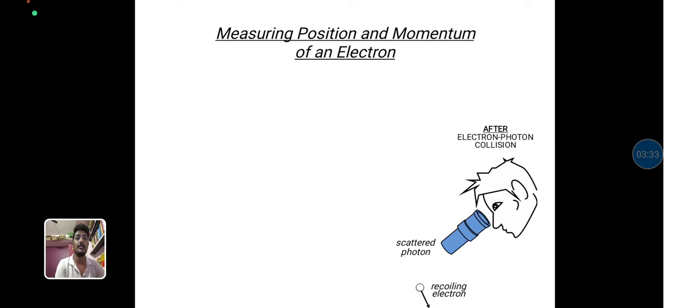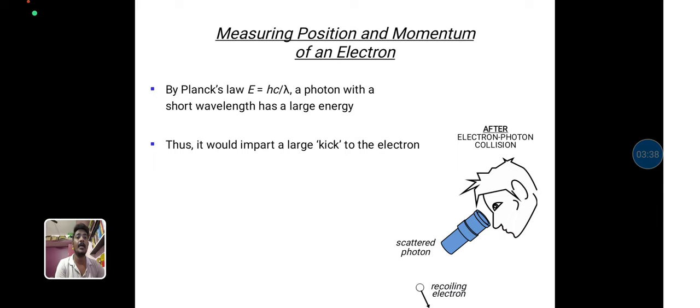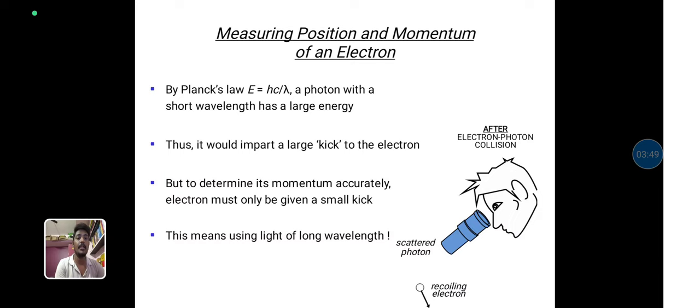Measuring the position and momentum of an electron. From the Planck concept, E is equal to hc divided by lambda, a photon with the short wavelength has the large energy. But to determine its momentum accurately, electron must only be given a small kick. Thus, the electron having the measuring position and momentum through the microscope virtually.